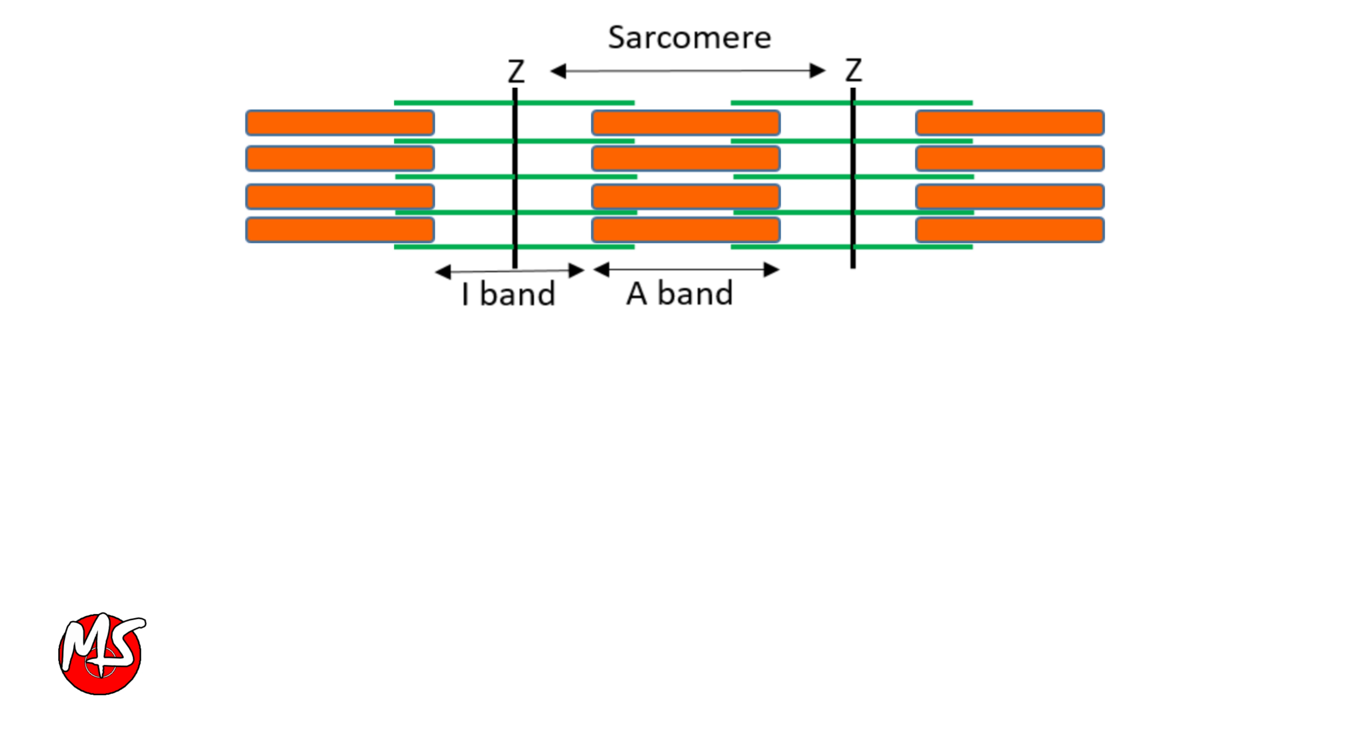In this area, thick filaments line up with thin filaments. The light bands are due to actin filaments, and it is called the I-band.